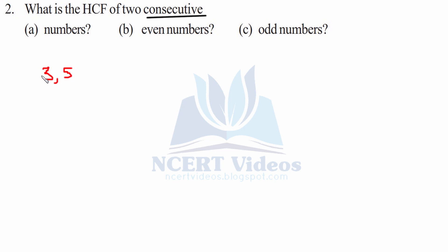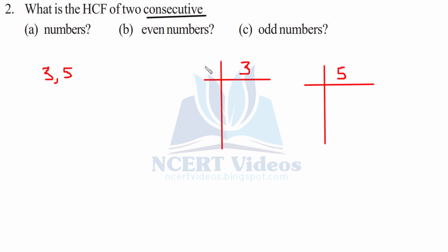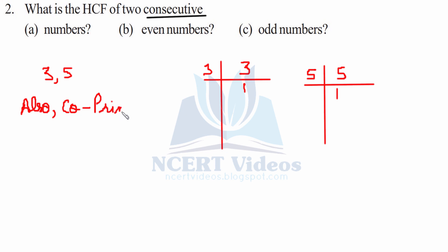Part c: consecutive odd numbers. Let's take 3 and 5. When we prime factorize them: 3 = 3×1, 5 = 5×1. They turn out to be co-primes. As we have learned, all co-primes have HCF equal to 1. So the HCF = 1 for consecutive odd numbers. That was your second question.